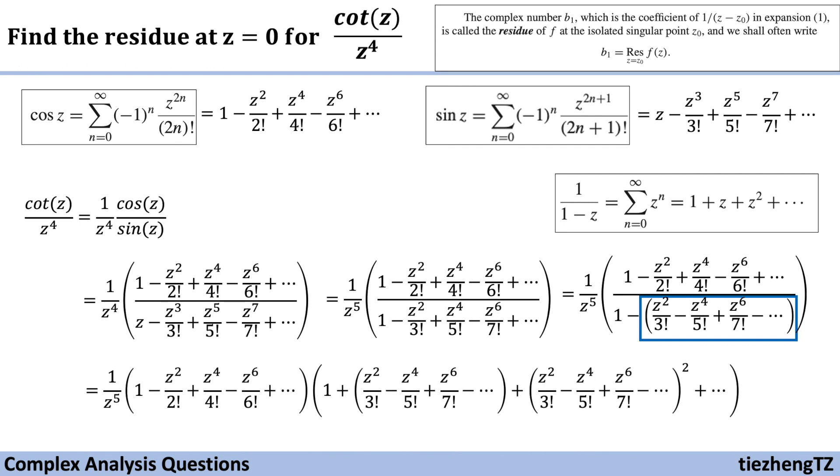We have 1 over z to the power of 5. We just copy the numerator part and then change the denominator part into 1 plus the function, then plus the function square, then plus the function to the cube.